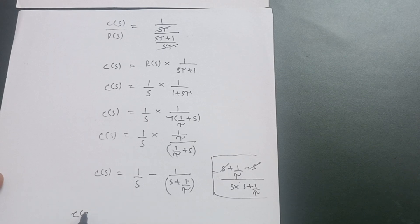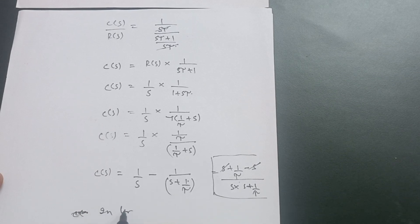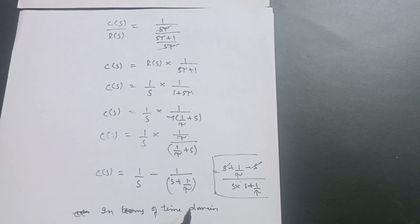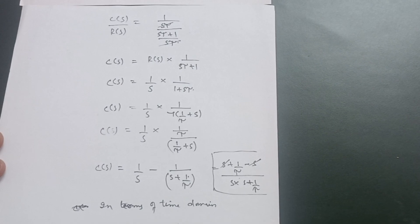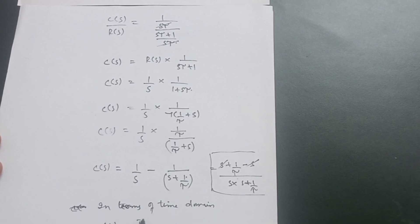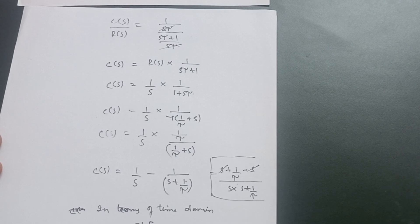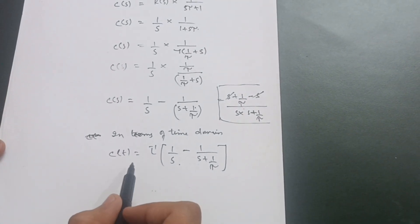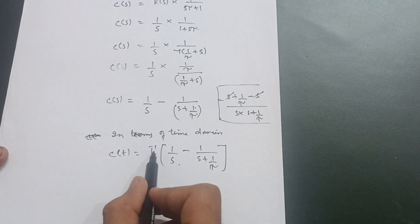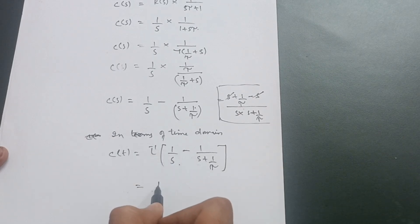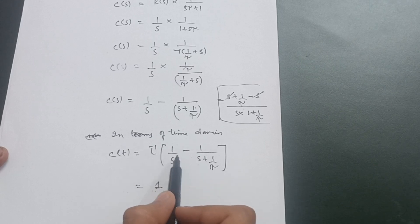Now applying the inverse Laplace transform to get the time domain response. The inverse Laplace of 1/S is 1. Using the standard formula: inverse Laplace of 1/(S + A) = e^(−A·T), where here A = 1/τ, so the inverse Laplace of 1/(S + 1/τ) = e^(−T/τ).